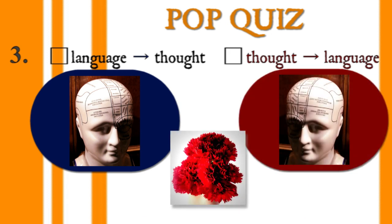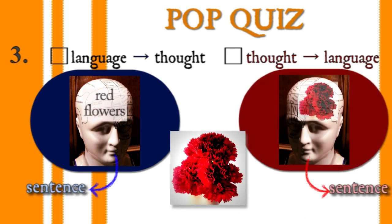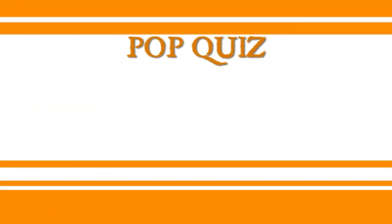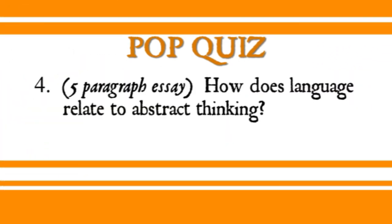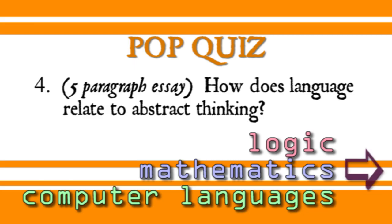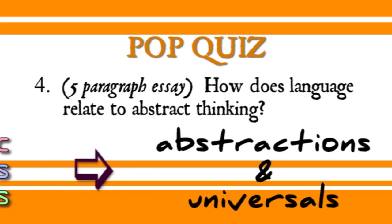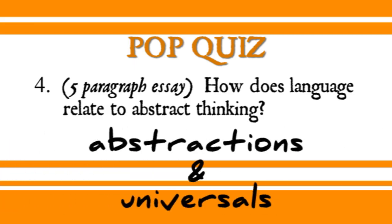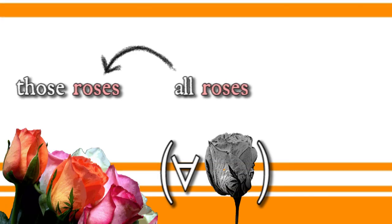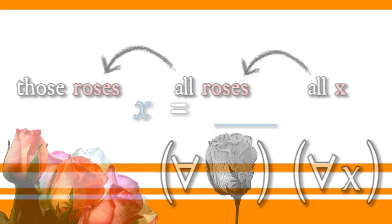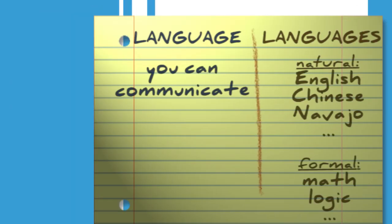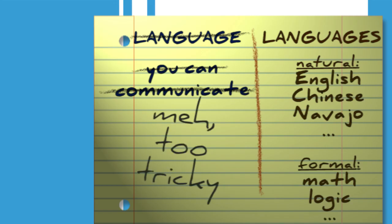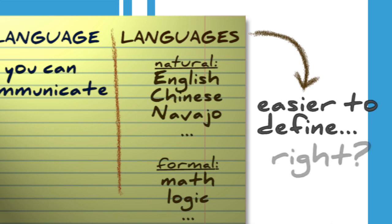And how does language relate to thinking — like the kind of everyday thinking we do when we have a specific thought, like 'those flowers are really, really red'? And also the abstract thinking we do in logic and mathematics, which allow us to think about things more abstractly and universally — instead of just those roses, I can think about all roses, or all x's, or even just the variable x. So it looks like language is a tricky concept. But what about languages — surely they're clearer, at least?